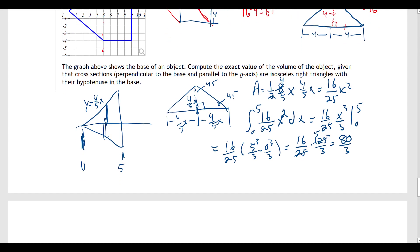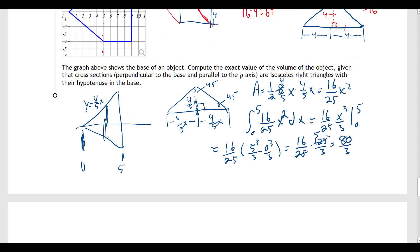So if we take our 80 over 3, and we add to the other part that was 64, get our common denominator, 3 over 3, and we end up with 192, and 80 is 272 over 3.